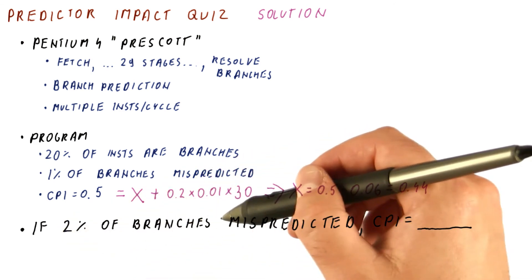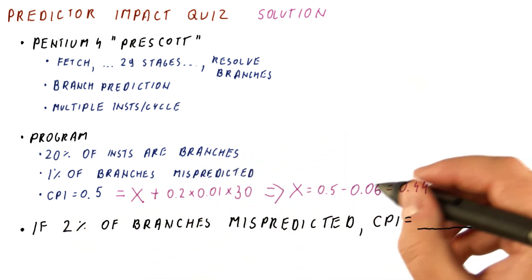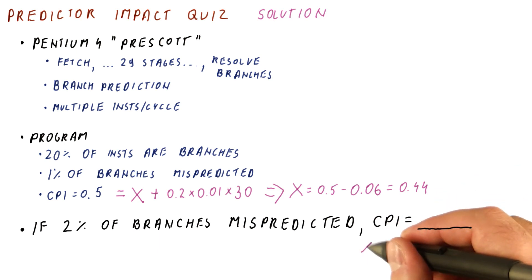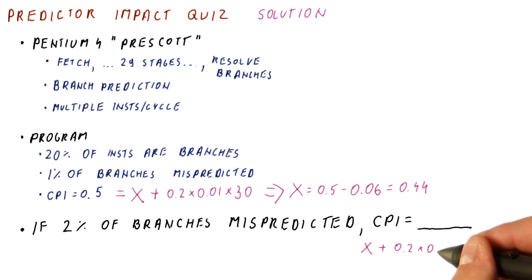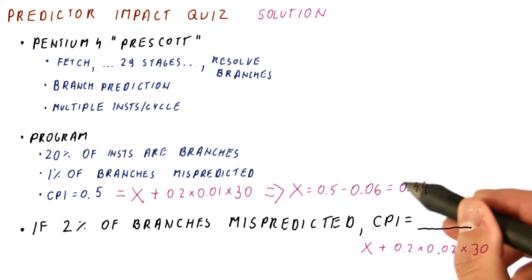Now when 2% of branches are mispredicted, our CPI will be equal to X plus, for branches, 2% mispredicted times a 30 cycle penalty. So we get 0.44 plus this,